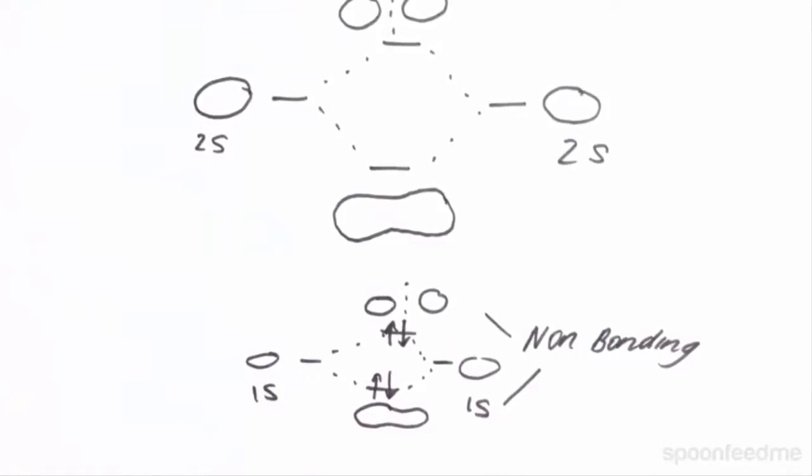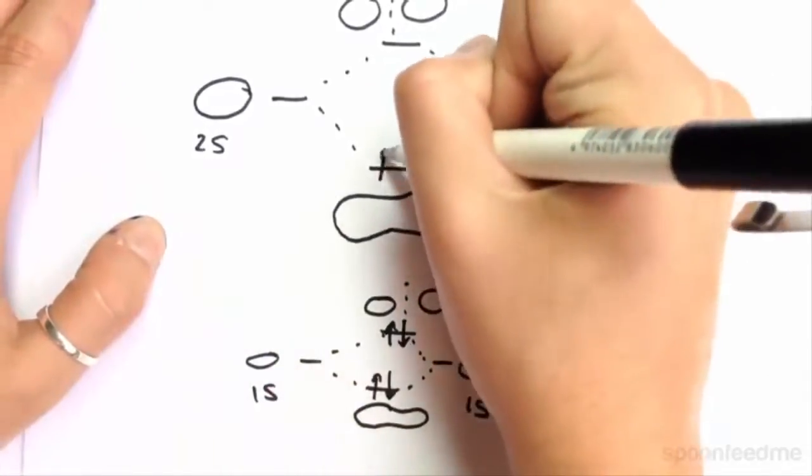The exact same rules apply as when we combine the 1s orbitals. The only difference is, as I've shown you, we draw them slightly bigger. These are our valence electrons. And so the normal rules apply in terms of bonding molecular orbitals and the antibonding molecular orbitals.